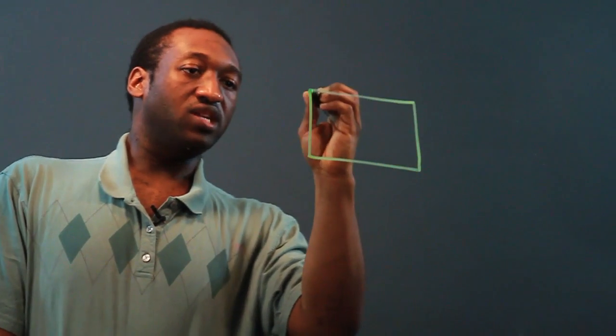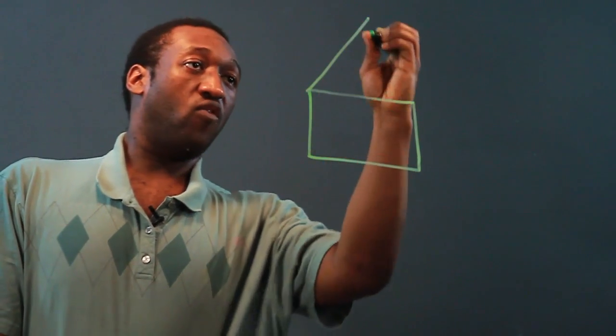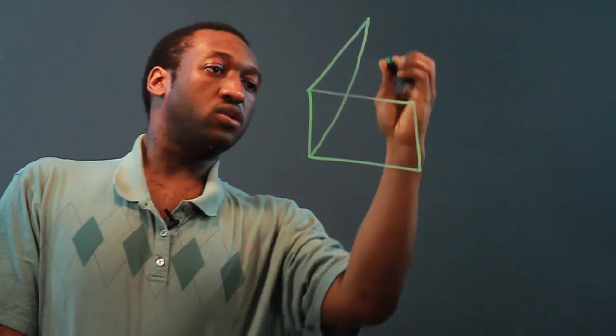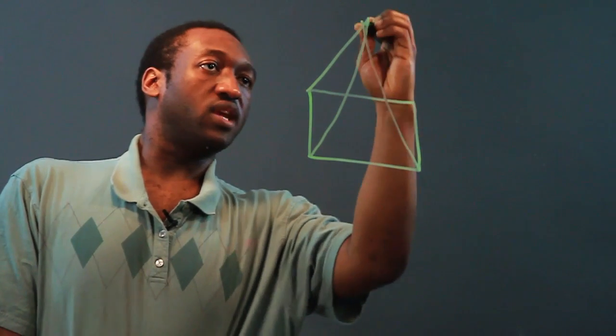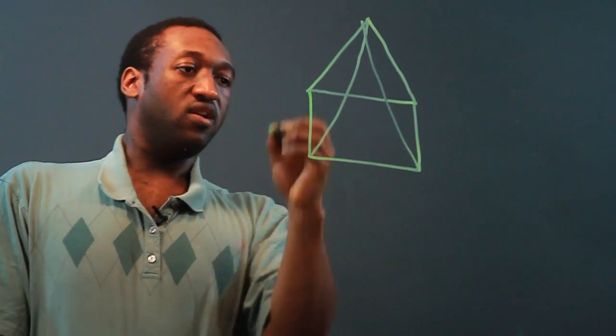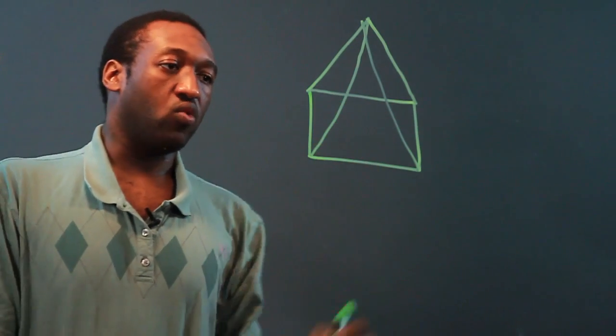So first let's talk about a pyramid. A regular pyramid has an equilateral shape as its base and all four of the corners come to a vertex at the top. So here let's say I have a pyramid where the base is a square.